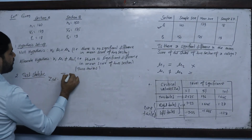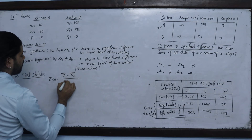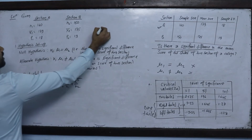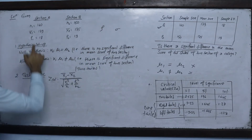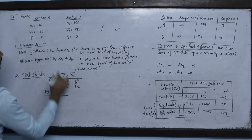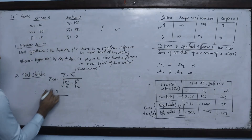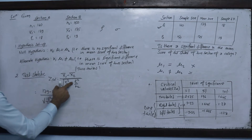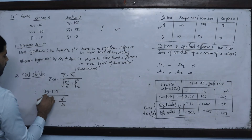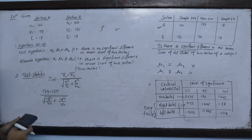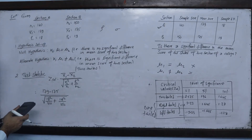The z-calculated formula is: z = (x̄₁ − x̄₂) divided by the square root of (σ₁² / n₁ + σ₂² / n₂). We use the sample standard deviation to represent the population. Now, x̄₁ = 179, x̄₂ = 175, so the numerator is 179 minus 175. n₁ is 160 and the first standard deviation is 18, so we have 18 squared divided by 160.